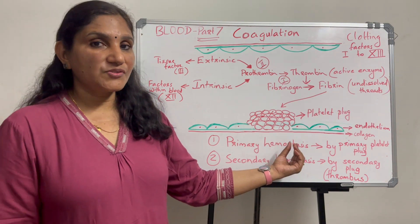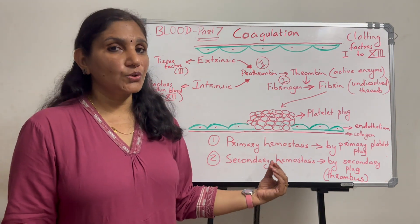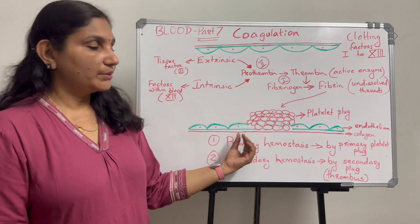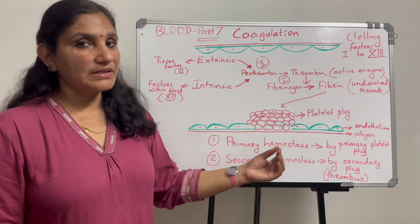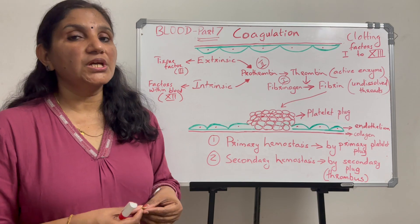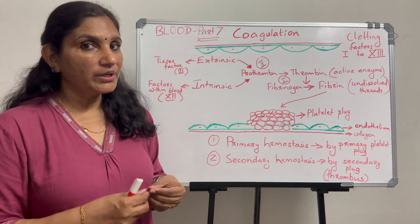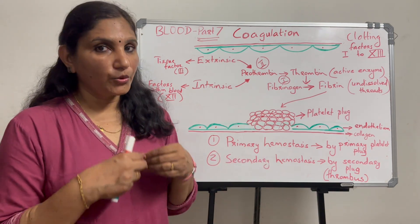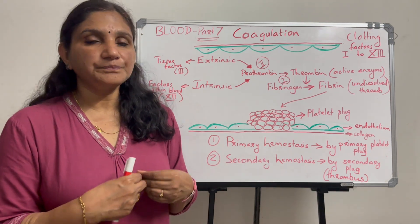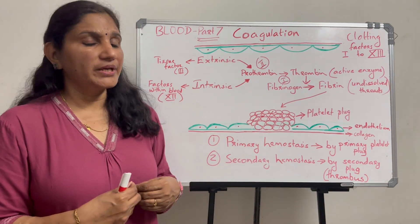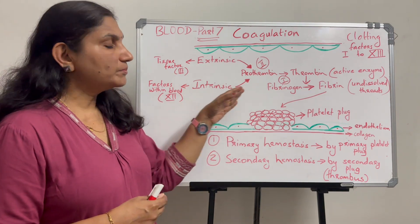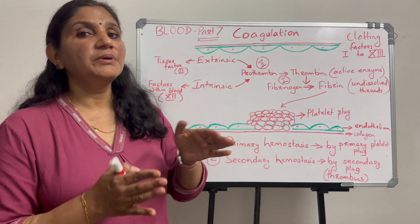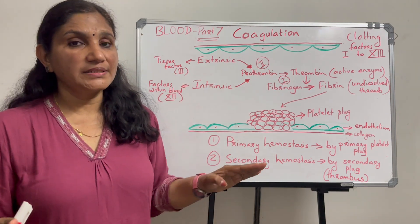How do you achieve this stoppage or control of bleeding? If you have a problem with a blood vessel, you have to stop the bleeding from that blood vessel. Normally, if you have blood, it flows through closed channels.